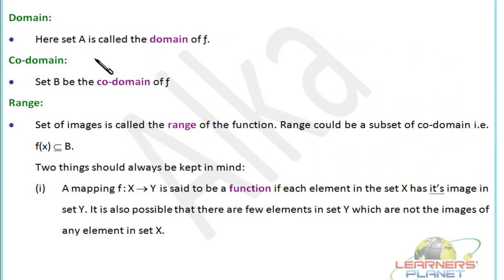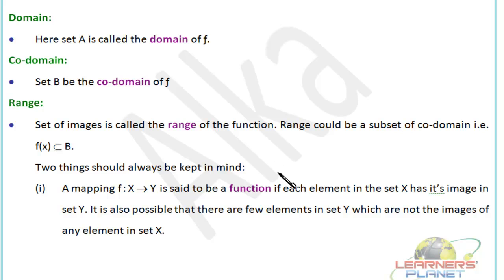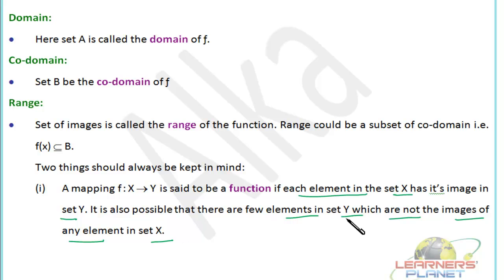To summarize: set A is called the domain of f, set B is the co-domain of f, and the set of images is called the range. The range can be a subset of the co-domain, so f(X) ⊆ B. A mapping f: X → Y is a function if each element of set X has its image in set Y. It is possible that there are elements in set Y which are not images of any element of set X.